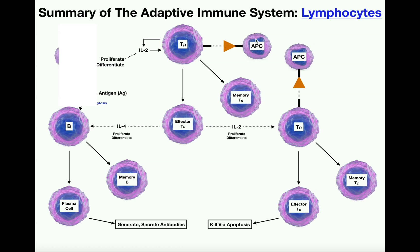That all changes when this naive helper T cell gets presented the antigen by the antigen presenting cell, which can float through the blood and into the lymphatic system to the secondary lymphatic organ. As soon as the antigen presenting cell shows the staph aureus antigen to this helper T cell, the helper T cell becomes activated, and we begin an immune response. The first step is this helper T cell secreting a cytokine called interleukin-2, or IL-2.